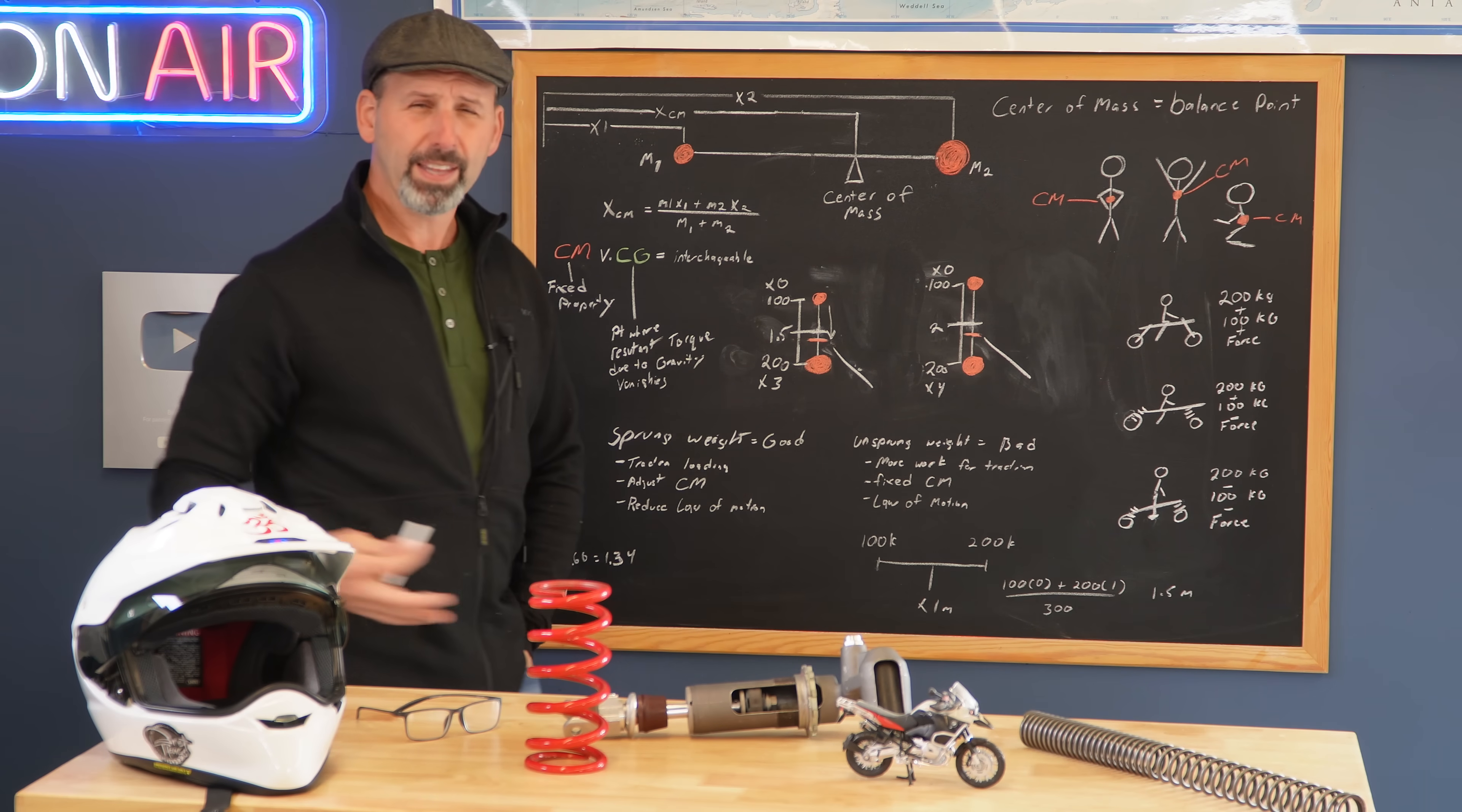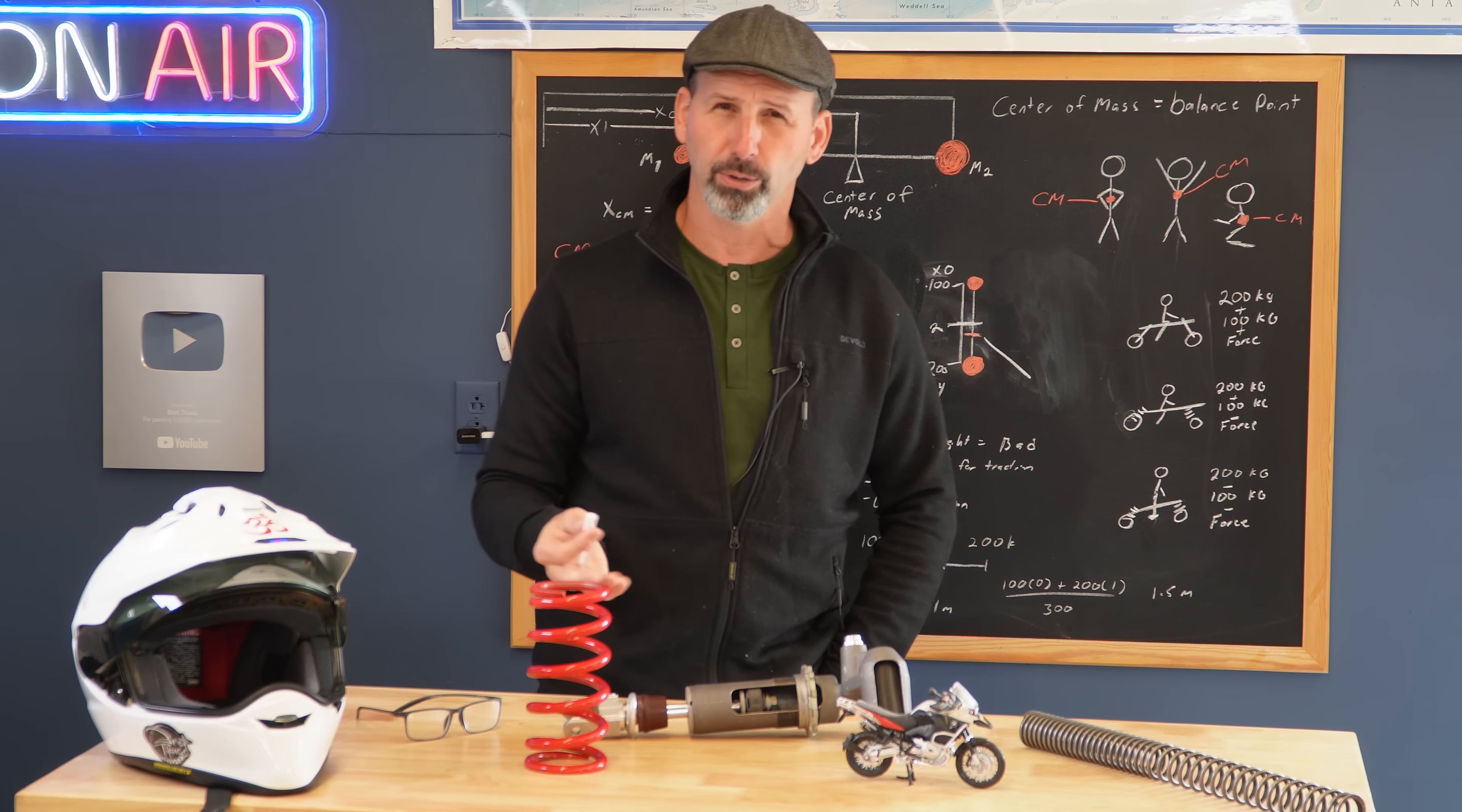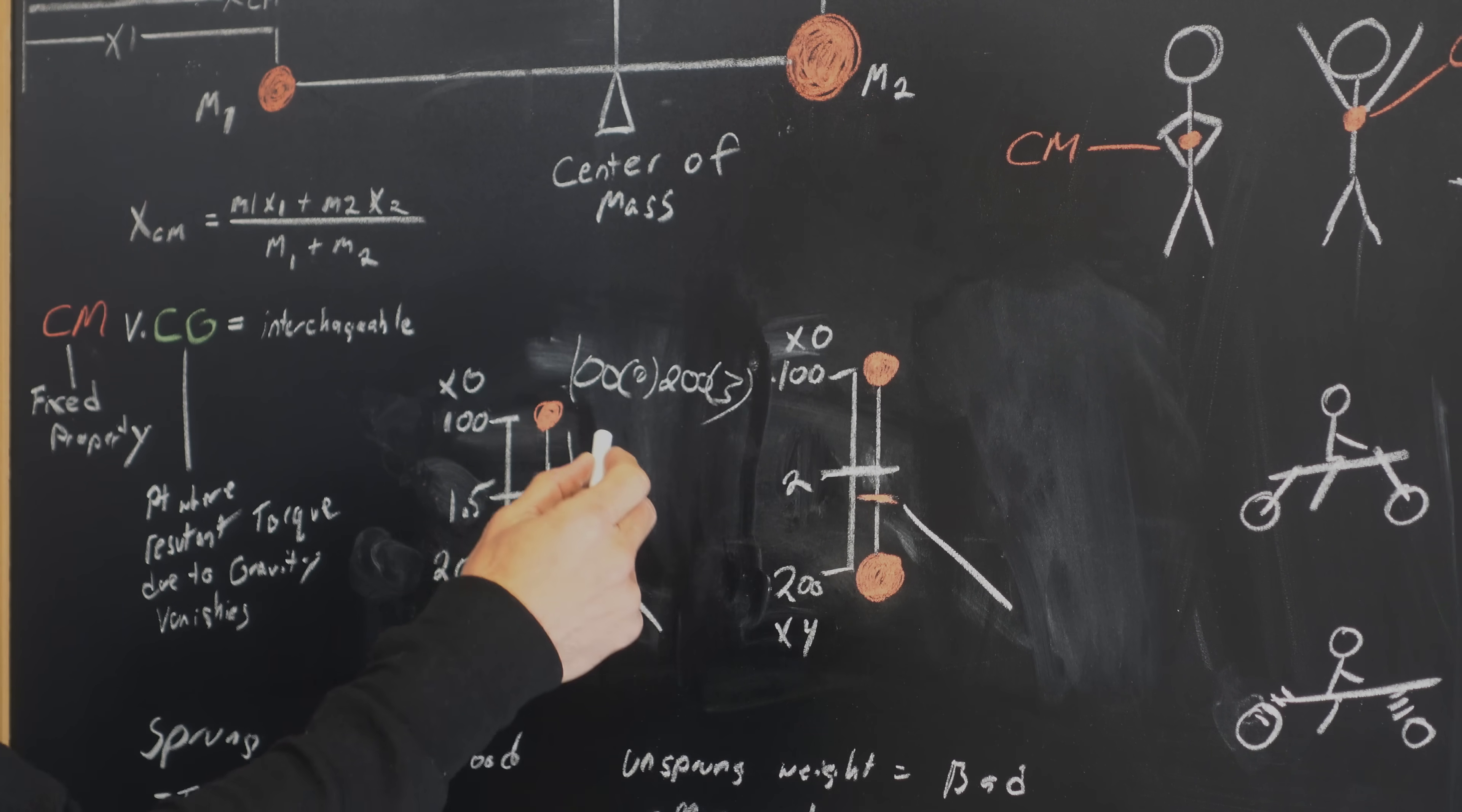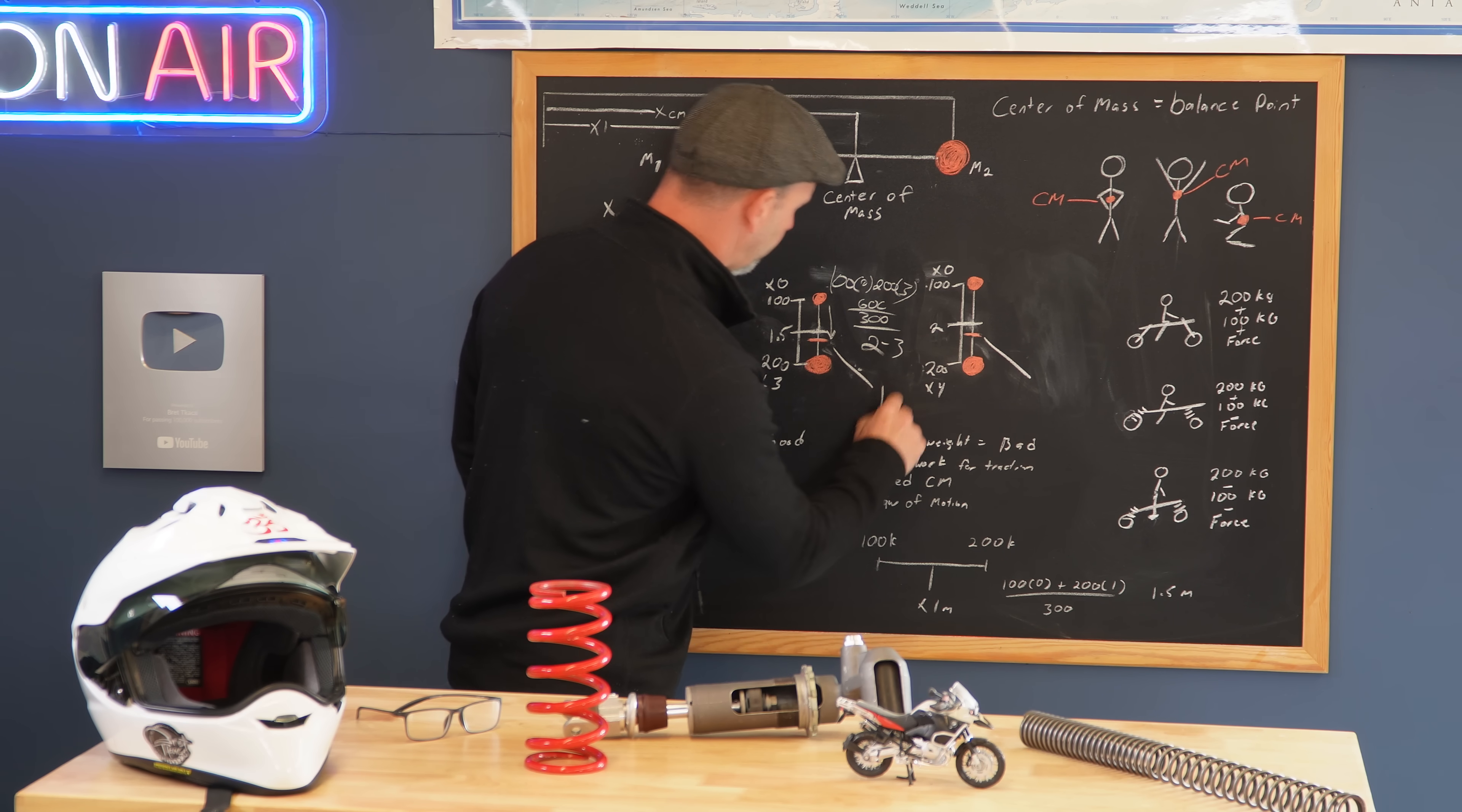Now, if we assume our rider is about 100 kilograms (220 pounds), and we take our position on the entire distance between the two, we've got 100 kilograms multiplied by zero. We multiply the mass of the motorcycle - a 200-kilogram motorcycle (440 pounds) - times a distance of 3. So 100 times zero is zero. 200 times three is six, giving us 600. We divide that by the combined mass of both rider and motorcycle, which is 300. That gives us two. We take the two, subtract it from the total distance of three, which leaves us a position of one.